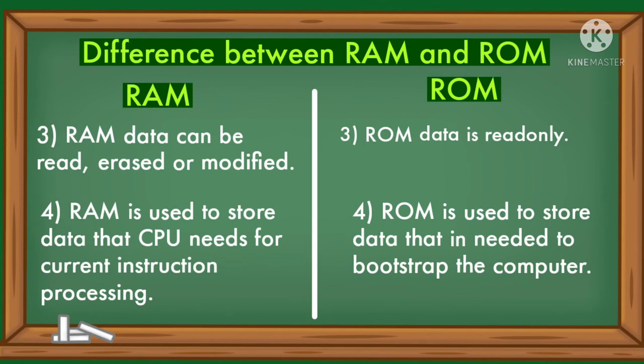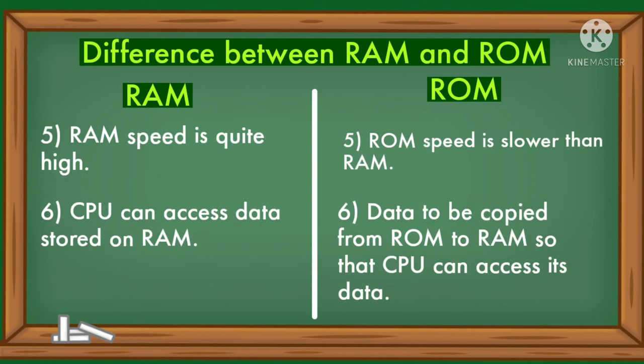RAM data can be read, erased, or modified. ROM data is read-only. RAM is used to store data that the CPU needs for current instruction processing. ROM is used to store data needed to bootstrap the computer. RAM speed is quite high; ROM speed is slower than RAM. The CPU can access data stored on RAM directly, whereas data must be copied from ROM to RAM for the CPU to access it.